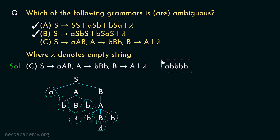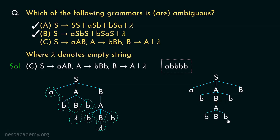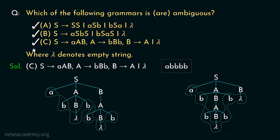Now let's check another derivation. The first level remains the same: S → small-a, capital-A, capital-B. From capital-A we derive small-b, capital-B, small-b. From only this B, we derive capital-A, which again derives small-b, capital-B, small-b. Two uppercase B's remain; using B → lambda we derive lambdas. The yield is again 'abbbb'. So grammar C is also ambiguous.